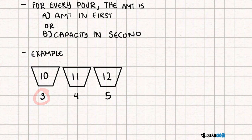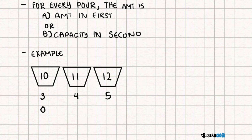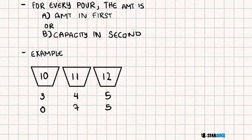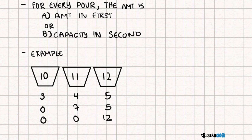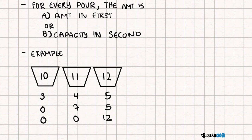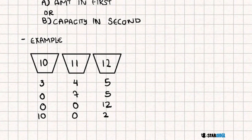If we simulate a couple of the pours in this example, we start with three, four, five. Pouring from one to two gives us zero, seven, five. We pour from two to three, then from three to one. From three to one, we notice there is more milk than there is capacity, so we only pour the amount of capacity. We get ten, zero, two. Then we could keep going: zero, ten, two, and so on and so forth.